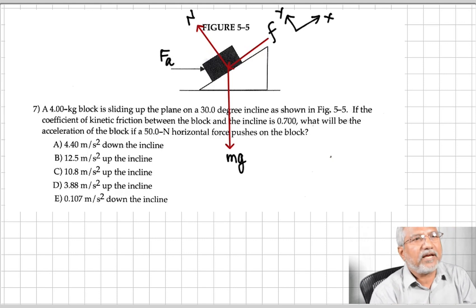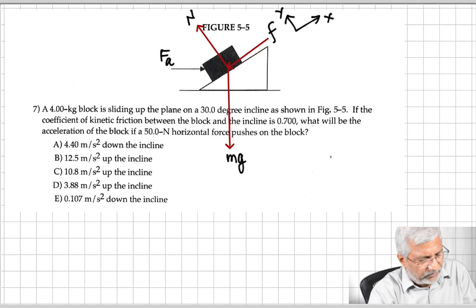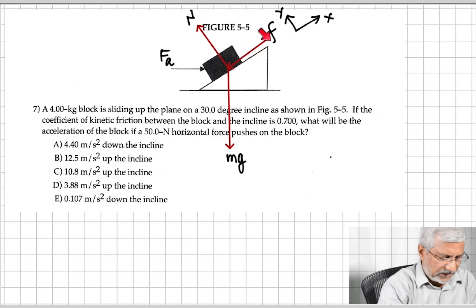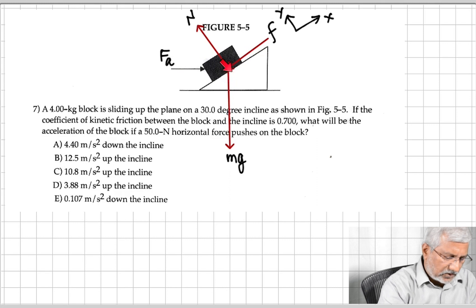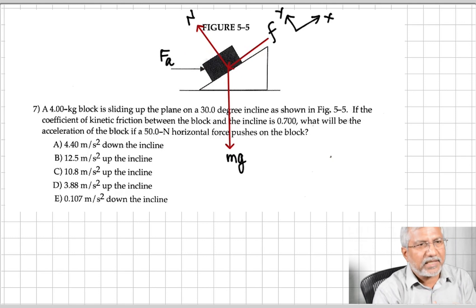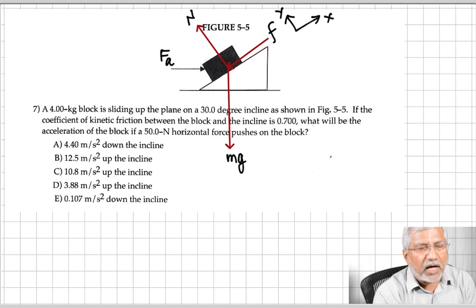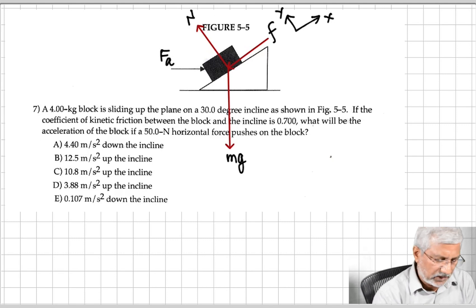For convenience, we fix the x-axis along the ramp and the y-axis perpendicular to the ramp. That means friction is along the x-axis and the normal force is along the y-axis. But the weight and the applied force are neither along x nor y, so we have to resolve — break down — the weight and the applied force into their components.